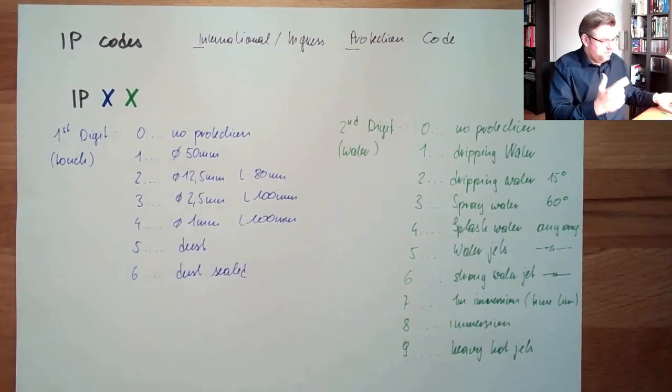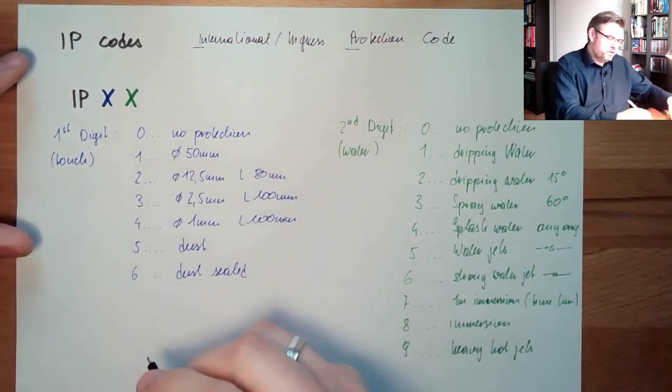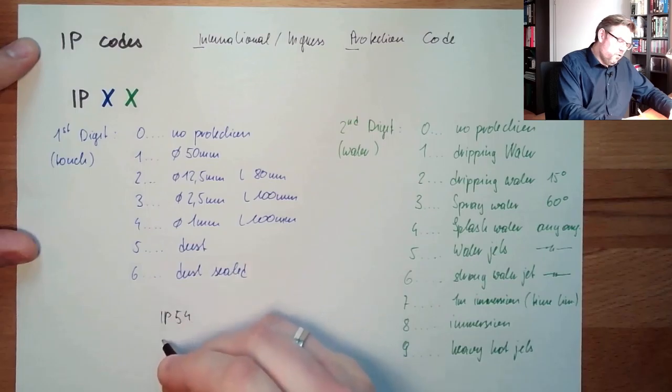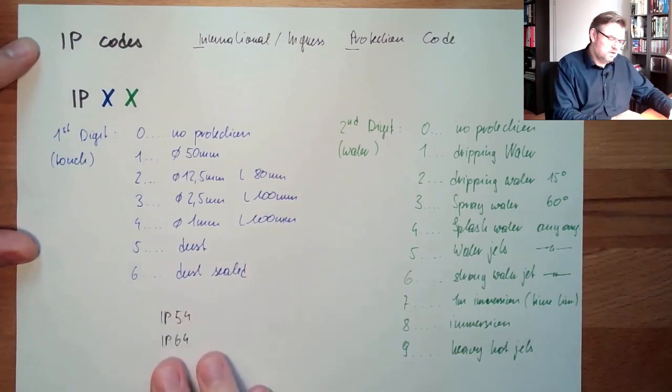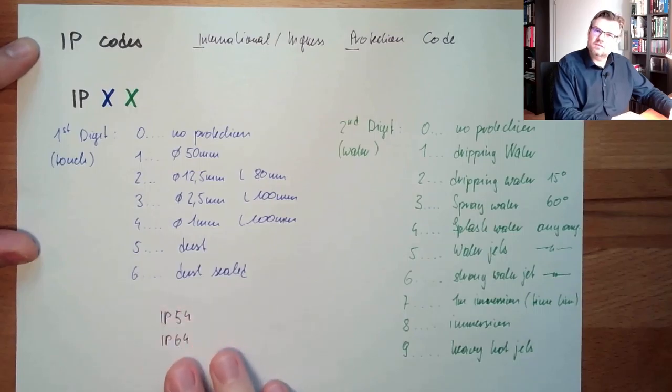Usual things in automation technology are IP54 or IP64, something like this. These are very usual standards. Most of the equipment fulfills.